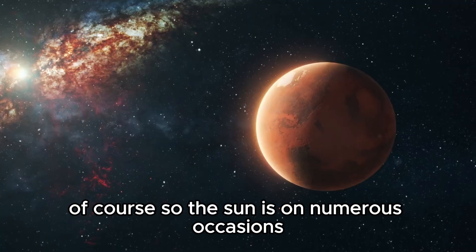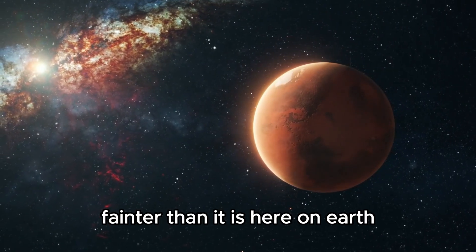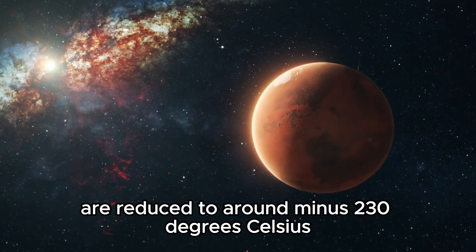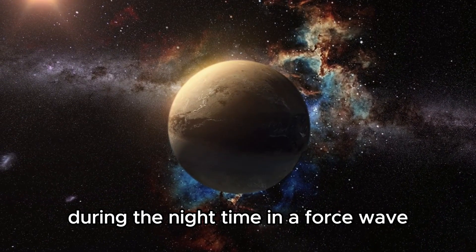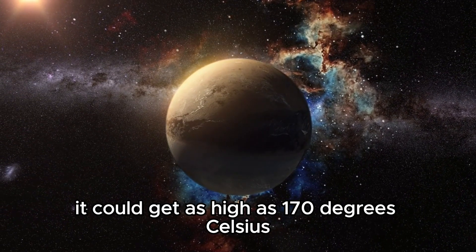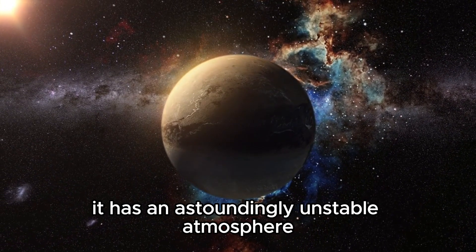Pluto is far away from the sun, of course, so the sun is on numerous occasions fainter than it is here on Earth, so its frosty temperatures are reduced to around minus 230 degrees Celsius. During the night time in a force wave, it could get as high as 170 degrees Celsius. It has an astoundingly unstable atmosphere.